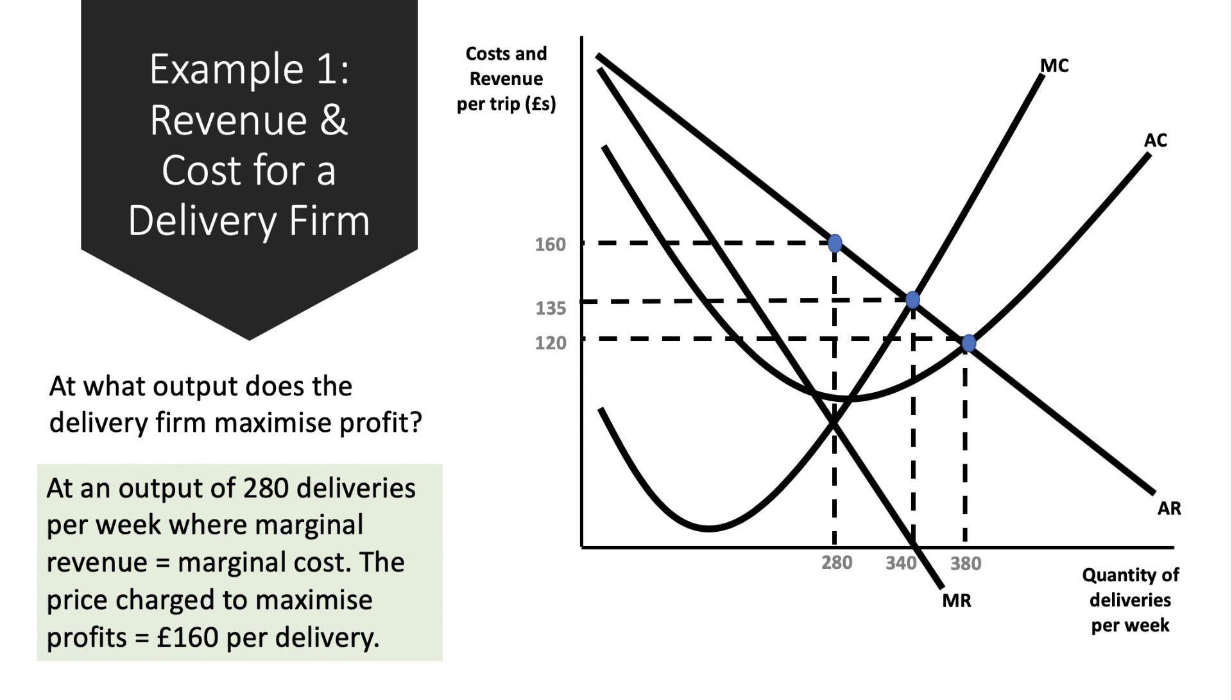Using the demand curve at an output of 280, the total profit is the gap between the price per unit, £160, and the estimated unit cost. You can see the shaded area which shows the total profit.